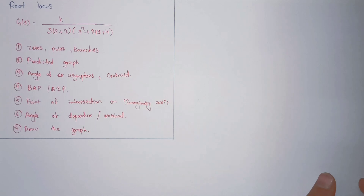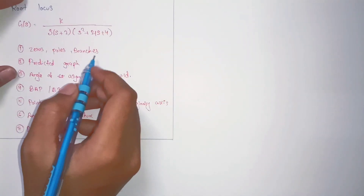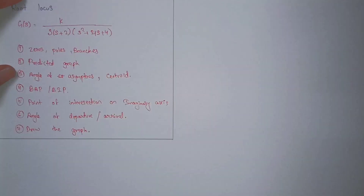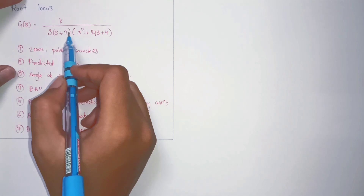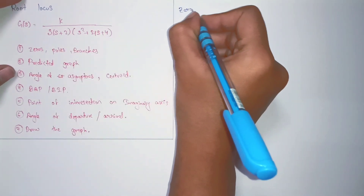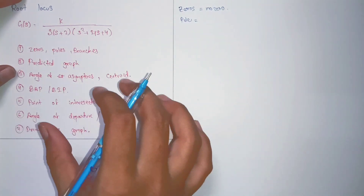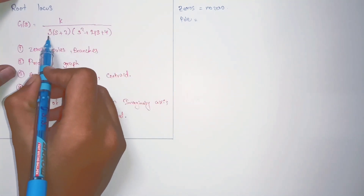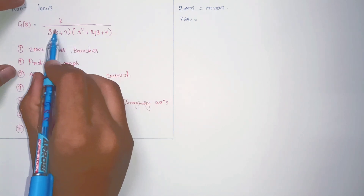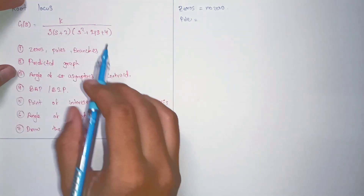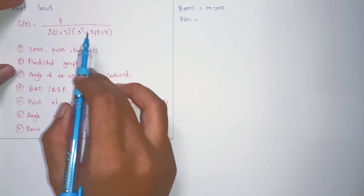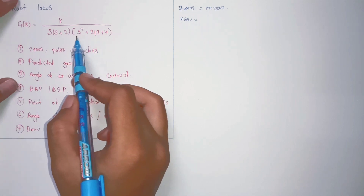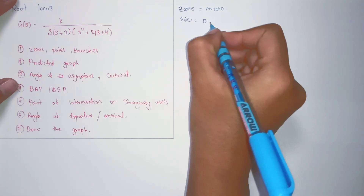Let's start solving this problem. As the first step says, we calculate the zeros and poles of the system. What is a zero? It's the number which will make the entire function equal to zero. Here we can see that nothing makes this function zero, so there are no zeros. Now for poles — a pole is the number which makes the denominator equal to zero and the overall function equals infinity. If we put s equal to zero or s equal to minus two, the overall denominator becomes zero, so those are poles: s equals zero and minus two.